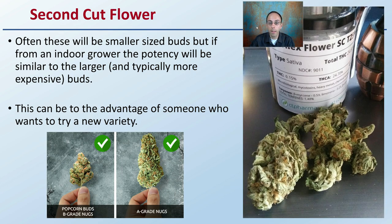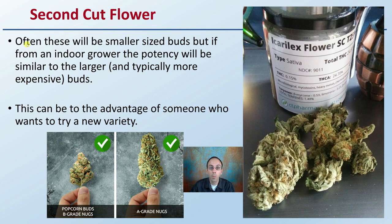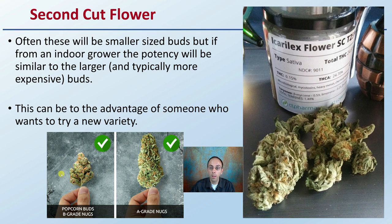That leads to the last point: second cut flower, in the sense that these are often smaller sized buds. But from an indoor grower, the potency will be very similar to the larger, typically more expensive buds. This can be advantageous for someone who wants to try a new variety. It's important to sort the popcorn from the A grade, because consumers purchasing dry flower want those A grade buds. Second and B grades can still get some value — sometimes sent to make pre-rolls or for extraction — but you definitely want to select out your A grade, because A grade quality is going to get you an A grade price.